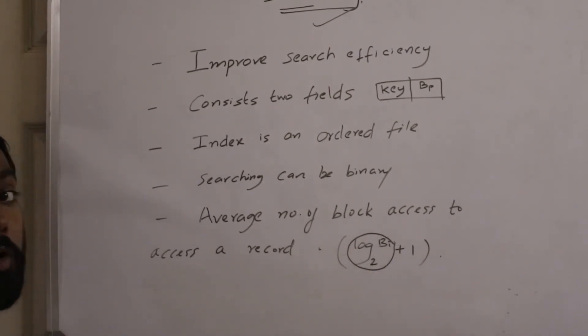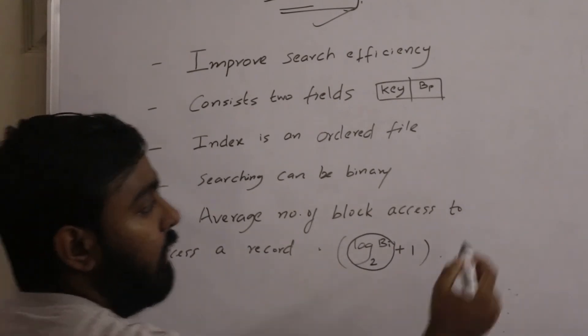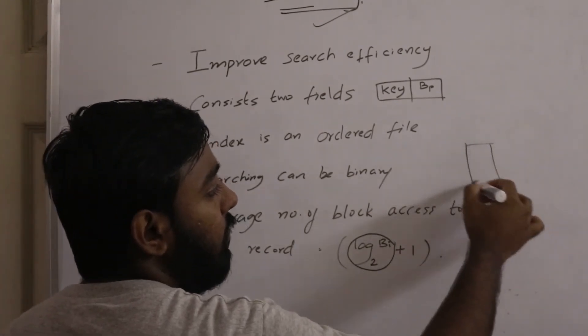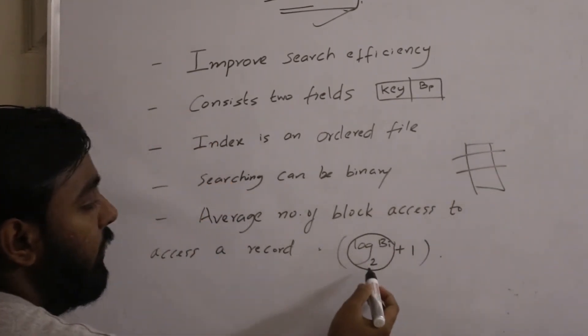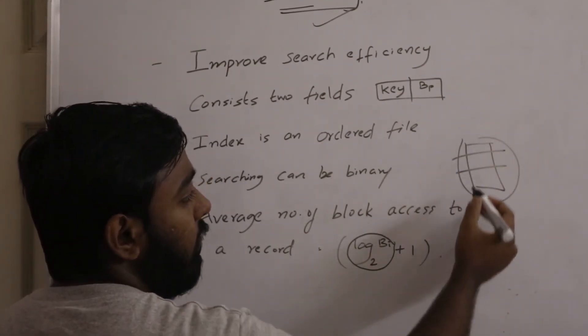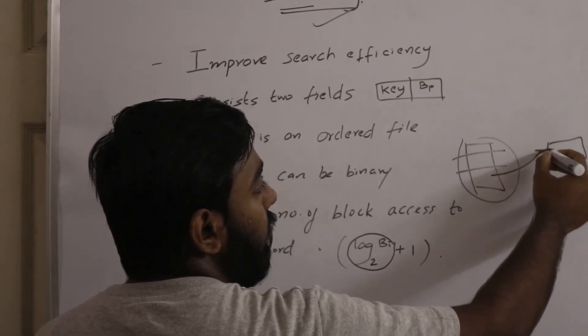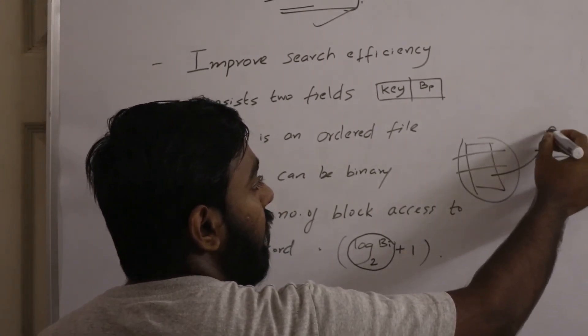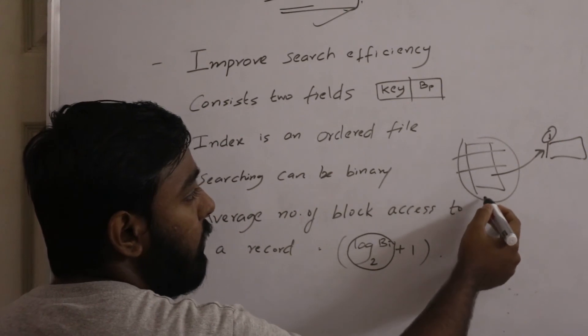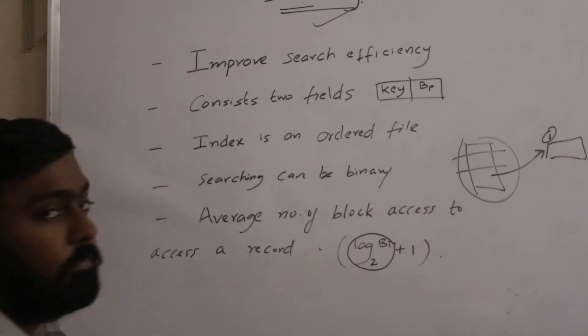...is for one more block from the data file. Initially, you will access log base 2 of BA number of blocks from the index file. After that, you will go to that block and access a record. This is the additional block access. So that is log base 2 of BA plus one. Thank you.